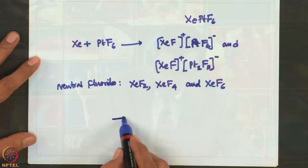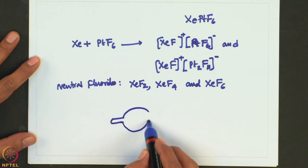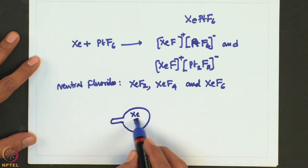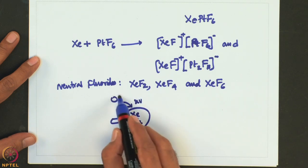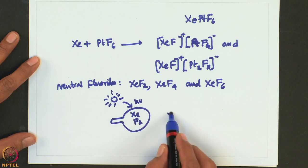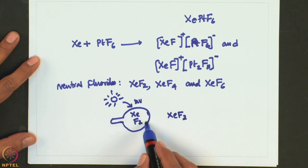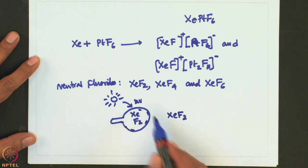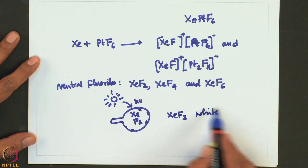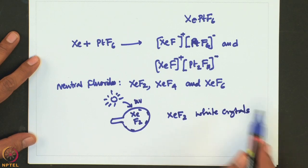Colorless crystals of XeF2 are deposited at the walls of the flask — you take a sealed tube containing xenon and F2 and shine UV light from sunlight, and XeF2 forms as white crystals on the sides. The sunlight causes dissociation of the relatively weaker F–F bond in F2 to form F atoms, which then react with xenon. With larger ratios of fluorine to xenon, higher temperature and higher pressure, one can also make XeF4 and XeF6.